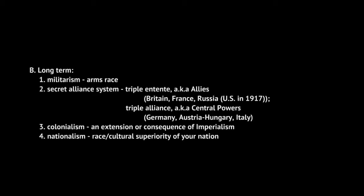Another cause is the secret alliance system. Countries have alliances with one another — it just wasn't made worldwide. This has been going on since probably 1903, 1904. Throughout the war, we have the Allies, or the Triple Entente, made up of Britain, France, and Russia, and the United States does join this side. We don't get involved until 1917. The other side was the Triple Alliance, or Central Powers — Germany, Austria-Hungary, Italy, and the Ottoman Empire.